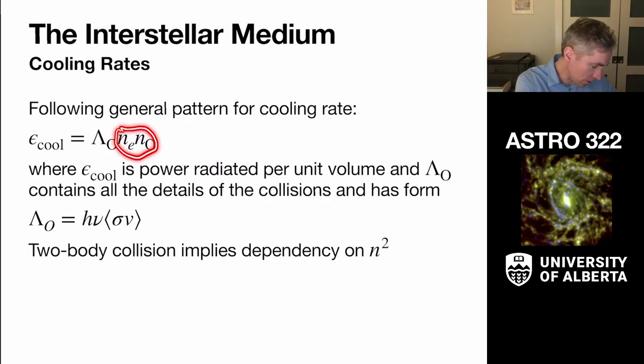And so the cooling rate must depend on the density of electrons and the density of the oxygen atoms together. So the product of those, and whatever this cooling rate is, gives us the total cooling rate of this per unit volume.